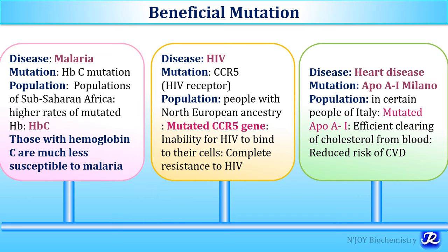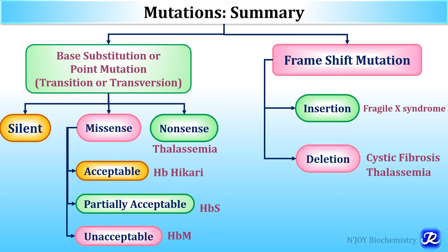Let's summarize today's topic on mutation. Mutation is a permanent change in the nucleotide sequence of DNA. There are two types: point mutation and frameshift mutation. Point mutation can be of transition or transversion type, with consequences including silent mutation, missense mutation, and nonsense mutation. Missense mutation examples include acceptable (HB Hikari), partially acceptable (HBS), and unacceptable (HBM). Nonsense mutation example is thalassemia. Frameshift mutation can be insertion type (example: Fragile X syndrome) or deletion type (examples: cystic fibrosis, thalassemia).